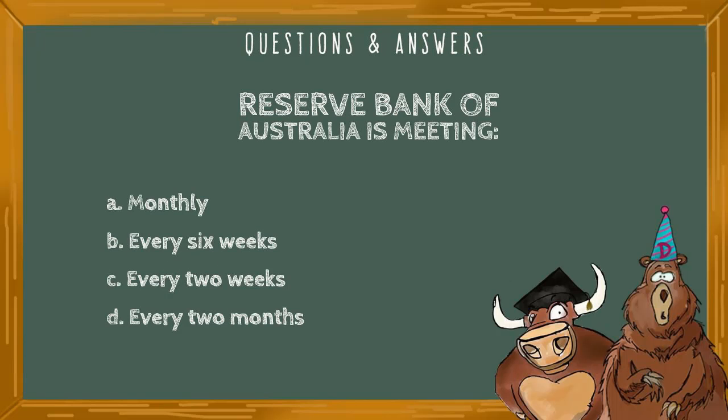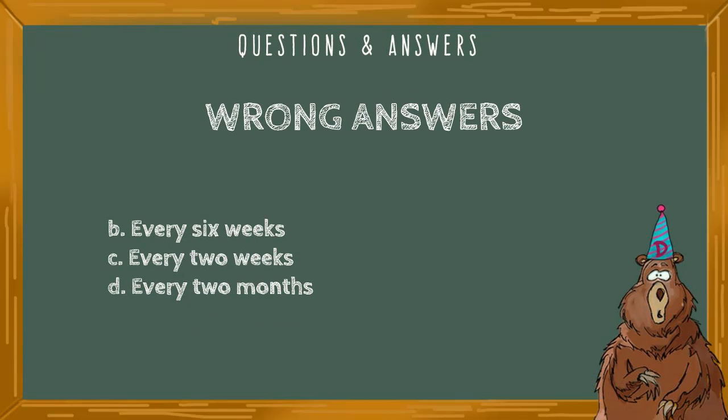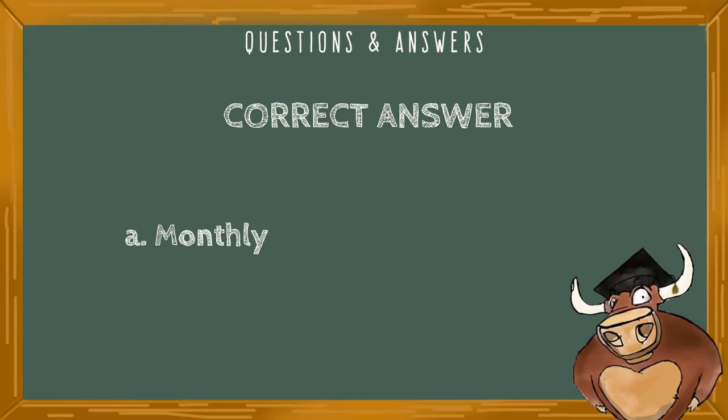Reserve Bank of Australia is meeting: A, monthly; B, every six weeks; C, every two weeks; D, every two months. Wrong answers include B, every six weeks; C, every two weeks; and D, every two months. The correct answer is A, monthly. Most central banks around the world meet monthly.